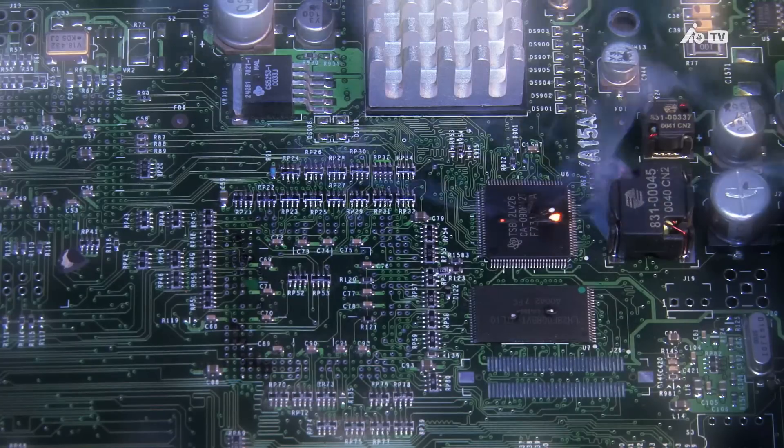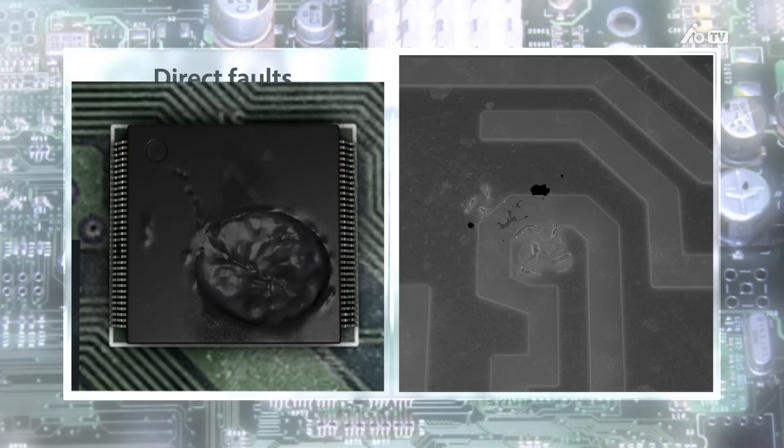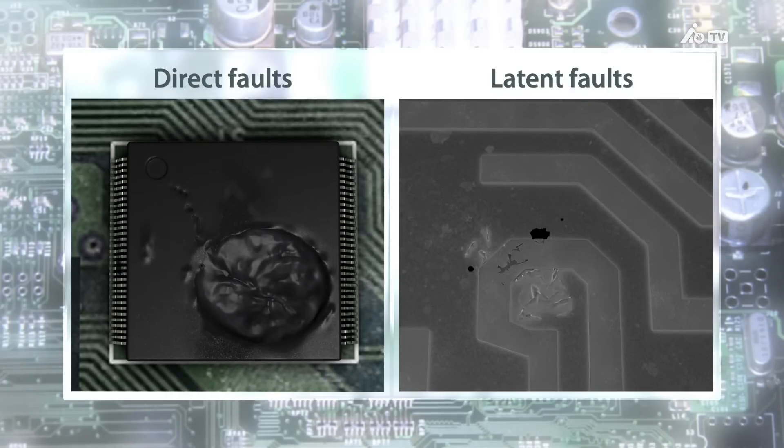Some of the damage sustained in this way is clearly visible, but some can only be seen under an electron microscope. These different types of damage are referred to as direct faults and latent faults.